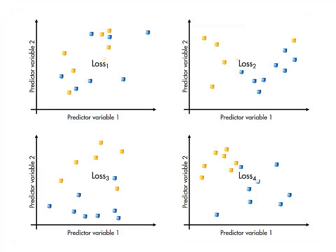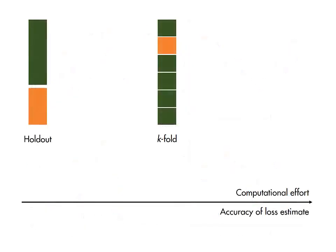The average loss from all the folds is the overall k-fold loss. This reduces the dependency of the loss on the particular way your data happened to be divided up, but it does require more computational effort to fit and evaluate multiple models.